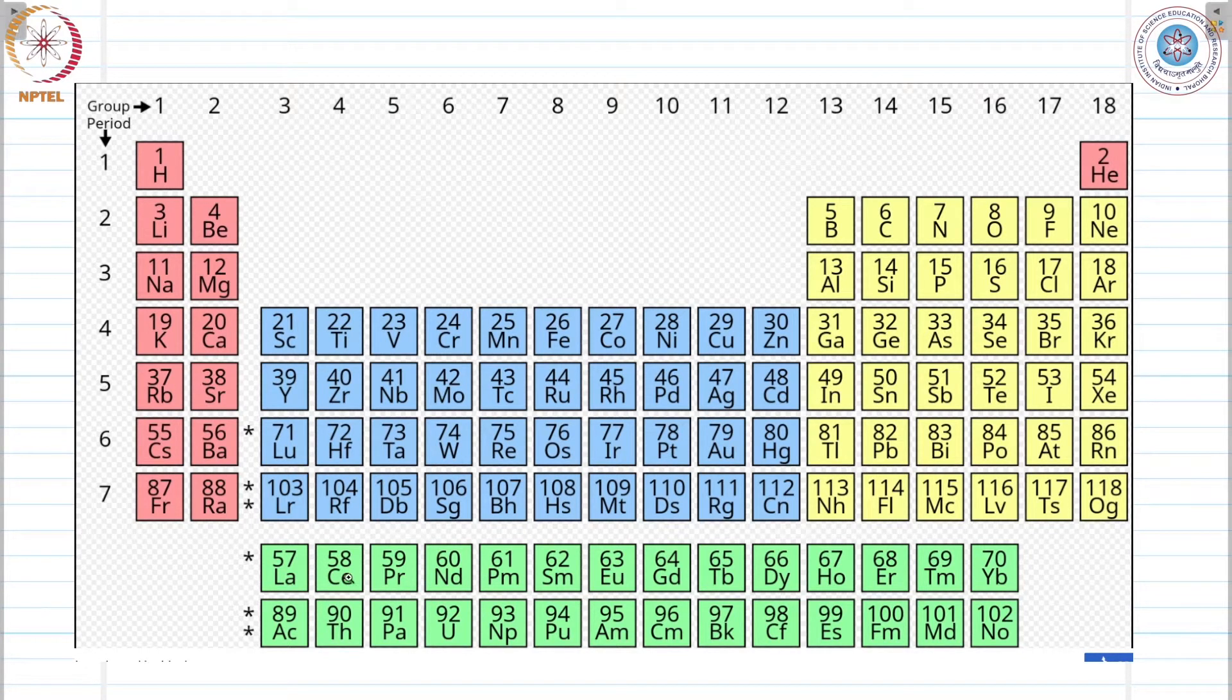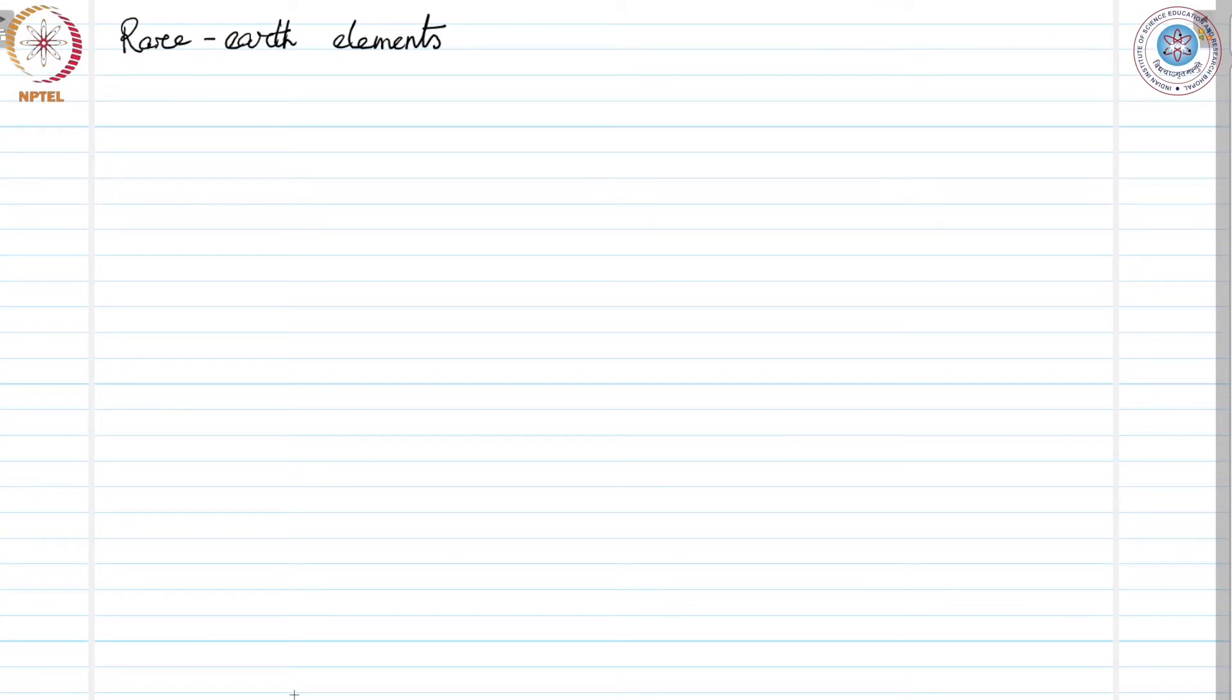We are considering only the lanthanides, not the actinides yet. The radii of these trivalent ions contract somewhat smoothly. Cerium has an ionic radius of 1.11 angstrom, and ytterbium has an ionic radius of 0.94 angstrom. This is the famous lanthanide contraction—the contraction is pretty smooth.